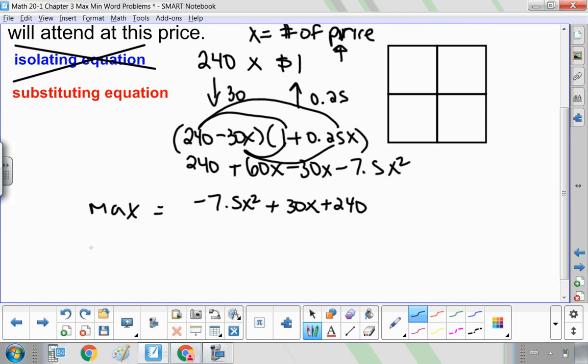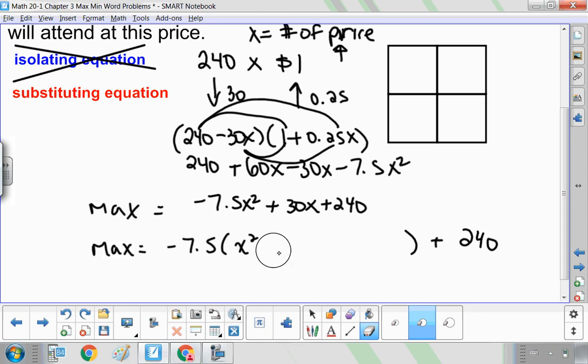So to do this, I need to complete the square. And I do that by dividing the number in front of X squared out. So remember that 240 is going to stay on the outside of the brackets. I only factor it from the X terms. So negative 7.5X squared divided by negative 7.5 is X squared. And then 30X divided by negative 7.5 is negative 4X.